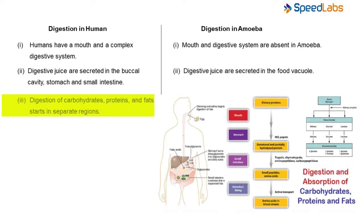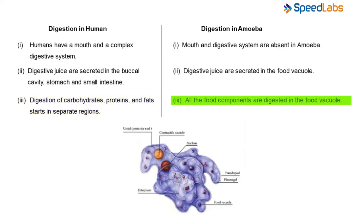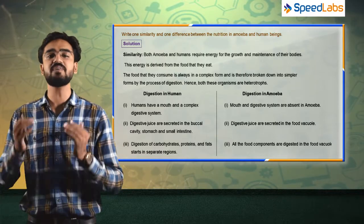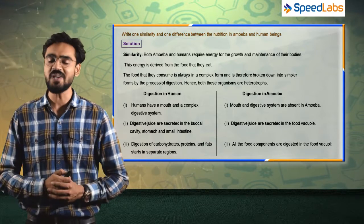Finally, in humans, digestion of carbohydrates, proteins, and fats starts in separate regions — there are different compartments for digestion of carbohydrates, proteins, and fats. Whereas in amoeba, all digestion takes place only in the food vacuole — all food components are digested in the food vacuole. So these were some similarities and some differences between amoeba and humans in the form of nutrition.